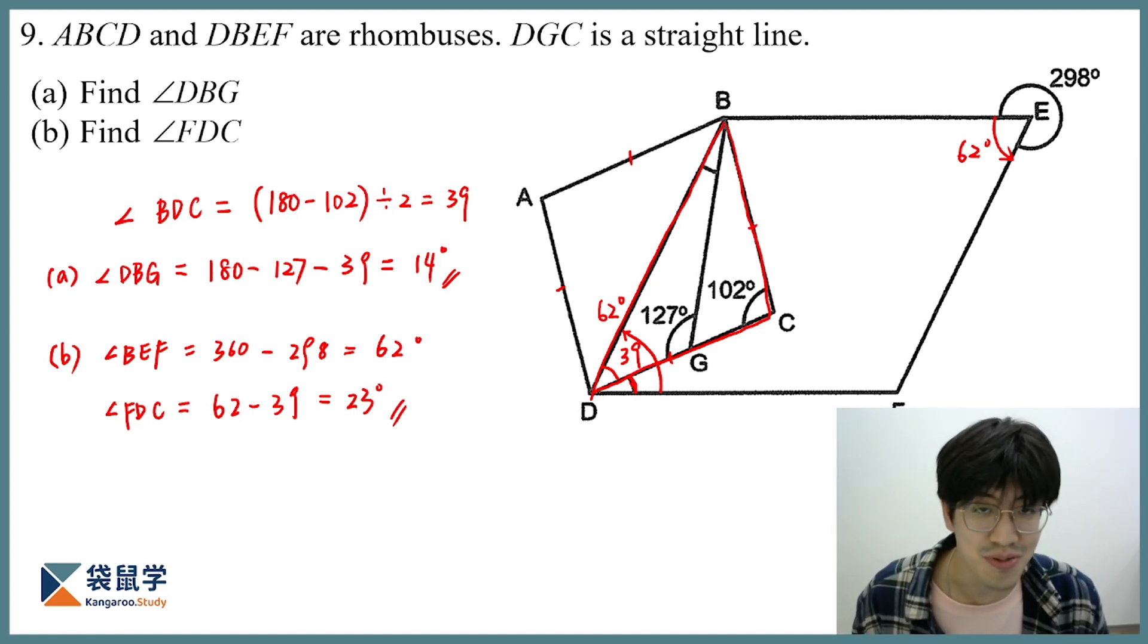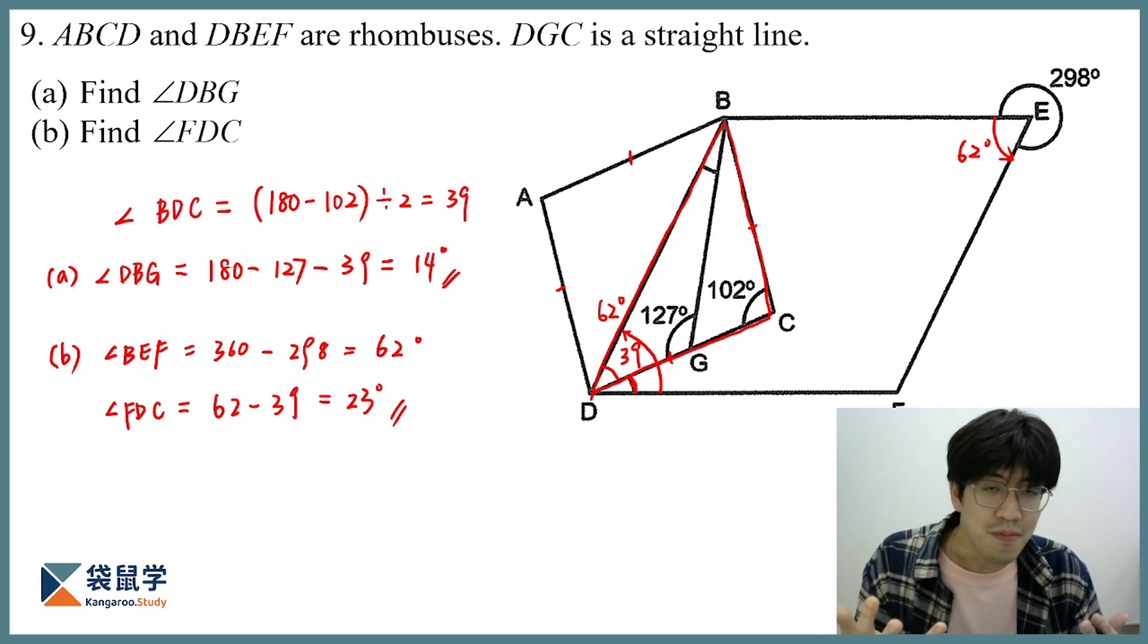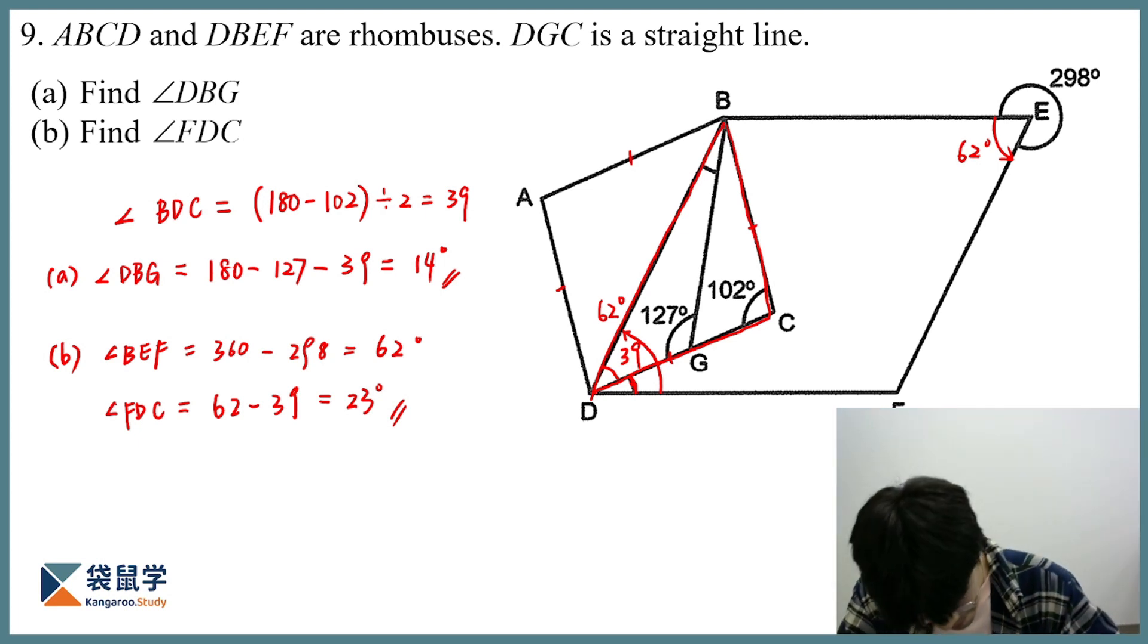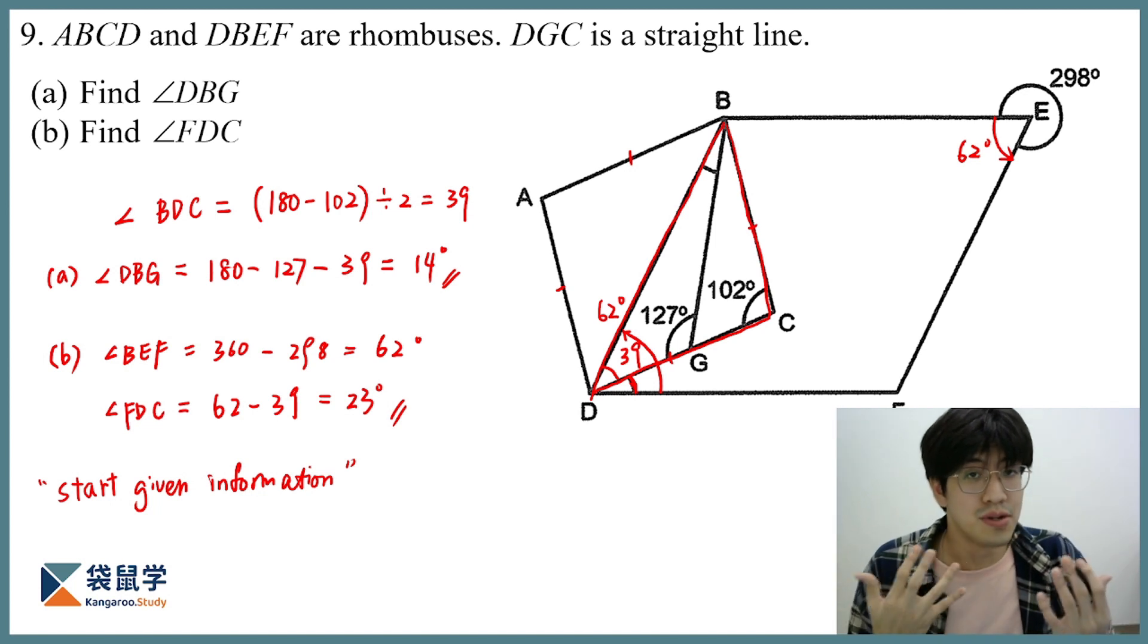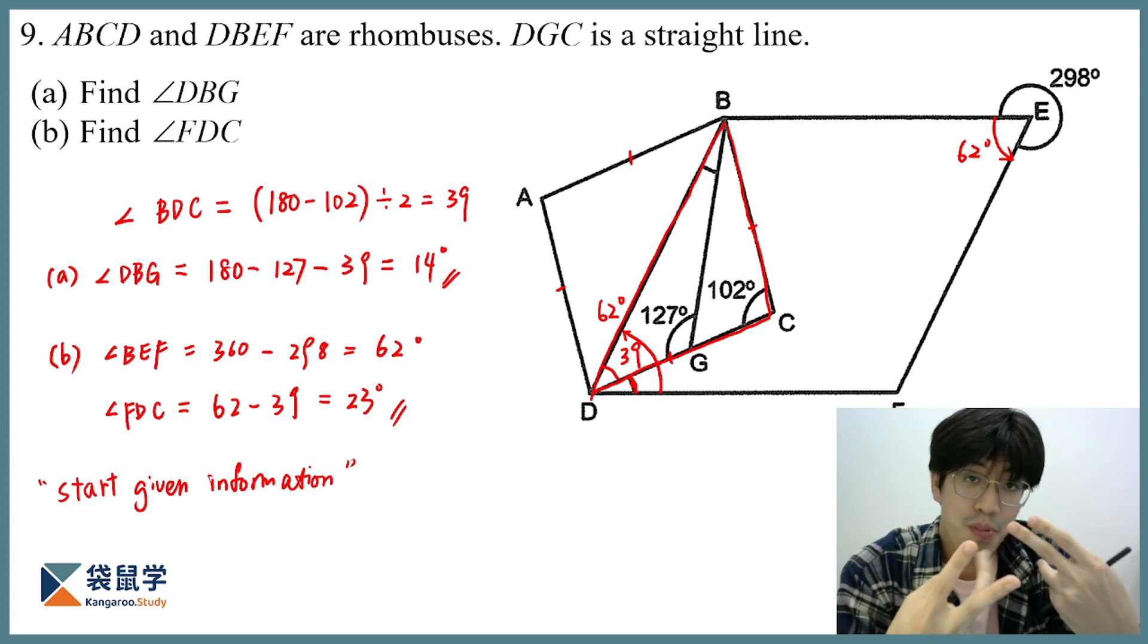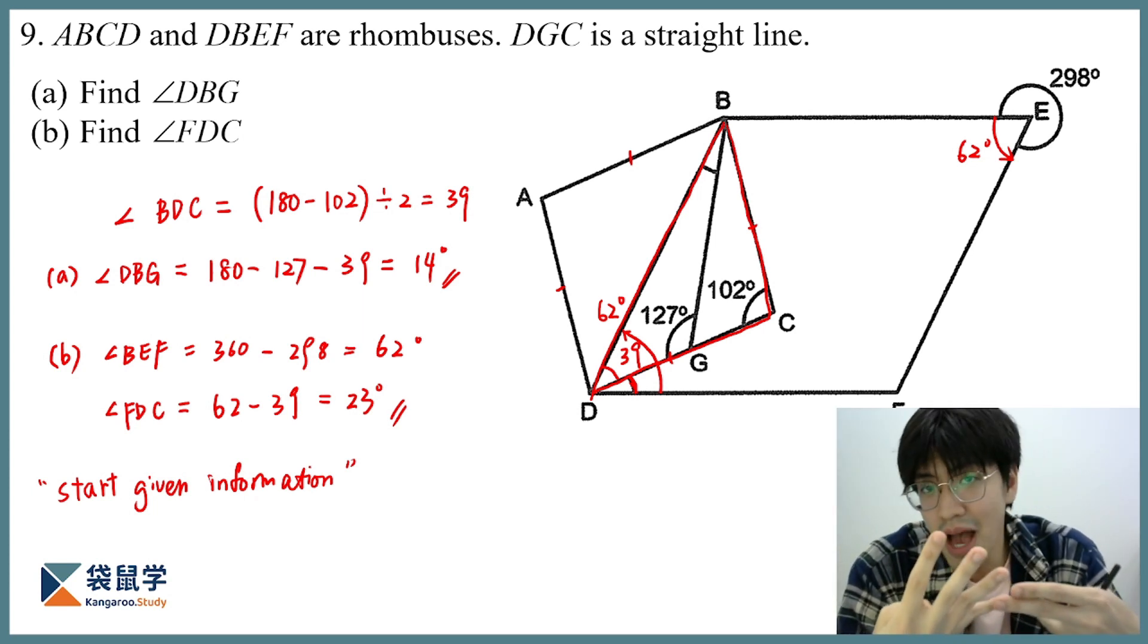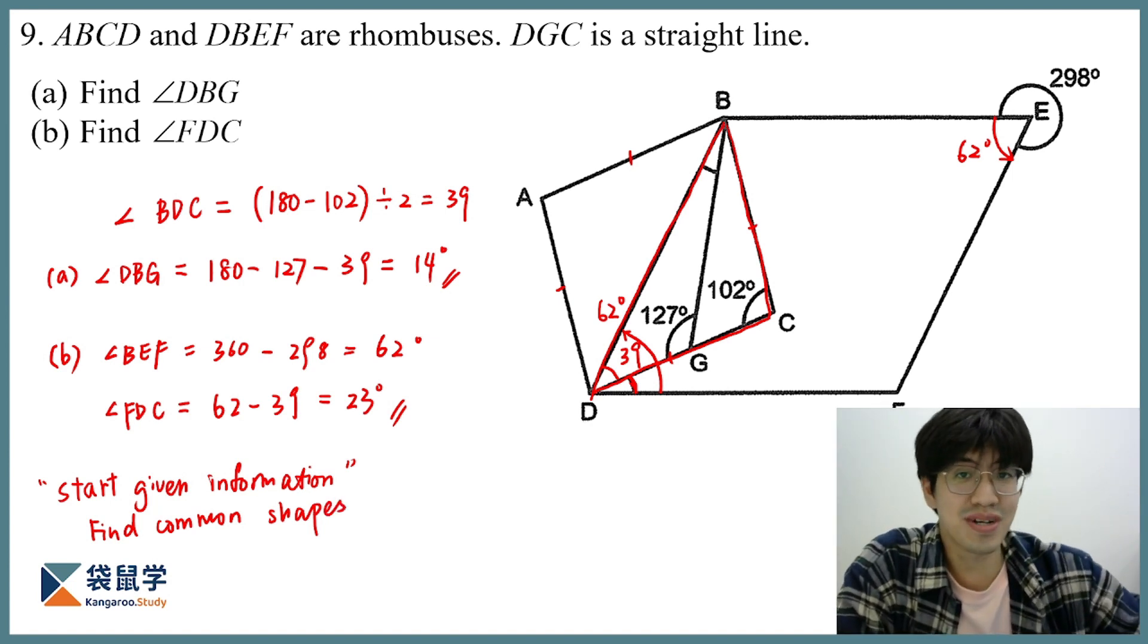So, the main takeaway of this question is that whenever you get stuck in the angle calculation, and you don't know where to go, you should start looking for the given information. So, always start with given information in the question, and what kind of information would be helpful? Well, we always try to look for those familiar shapes, those common shapes, like isosceles triangle, equilateral triangle, parallelogram, rhombus, or sometimes it could also be trapezia. So, the next rule of thumb is that you're going to find common shapes. So, those are the ideas behind solving an angle calculation problem.